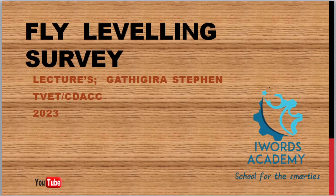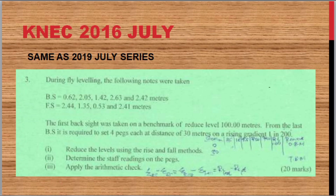This is the flying leveling calculation — a flying leveling survey done by the NECK and also the CDUCK. This is a Tibet CDUCK approved trainer, licensed. We have a question from the 2016 July series, and the same example can be found in the 2019 July series under fly leveling. During the fly leveling, the following notes were taken.